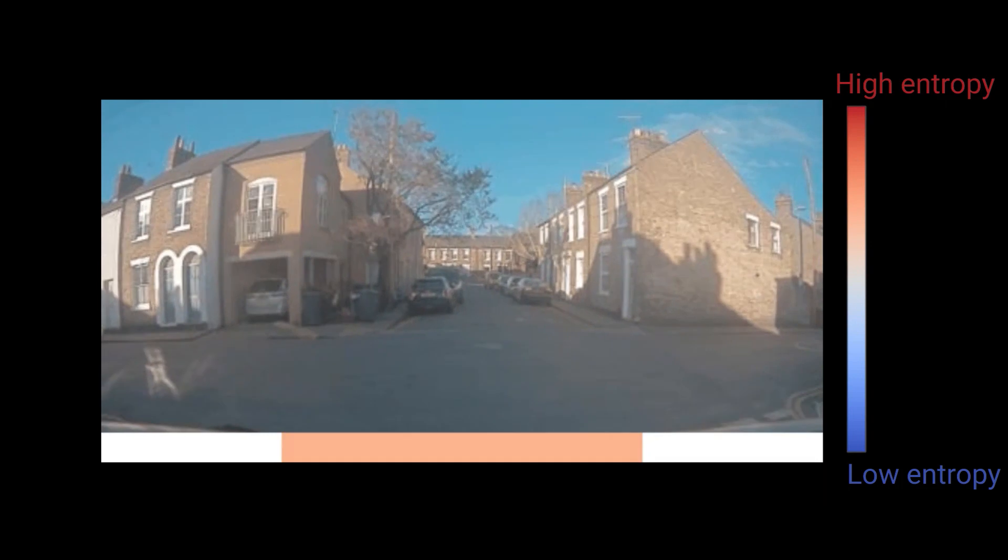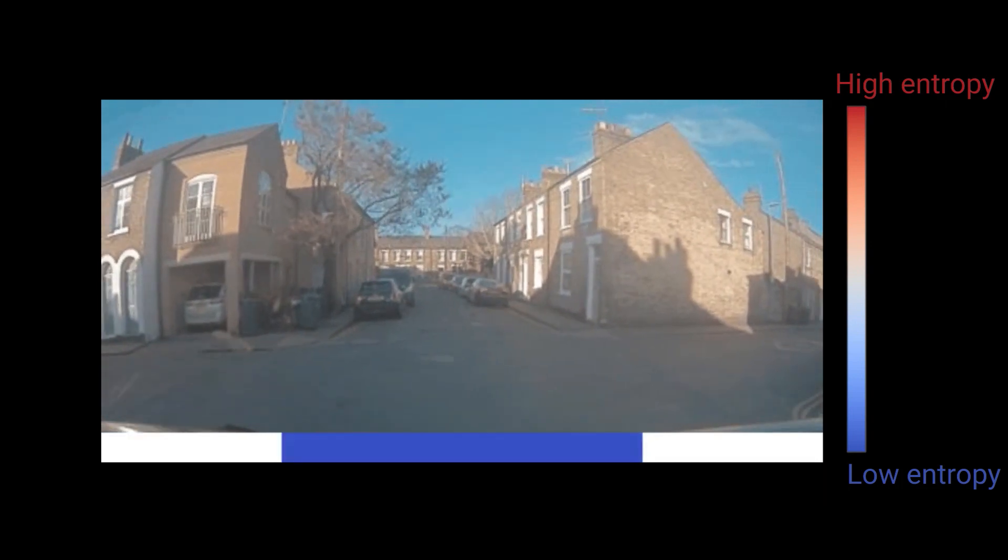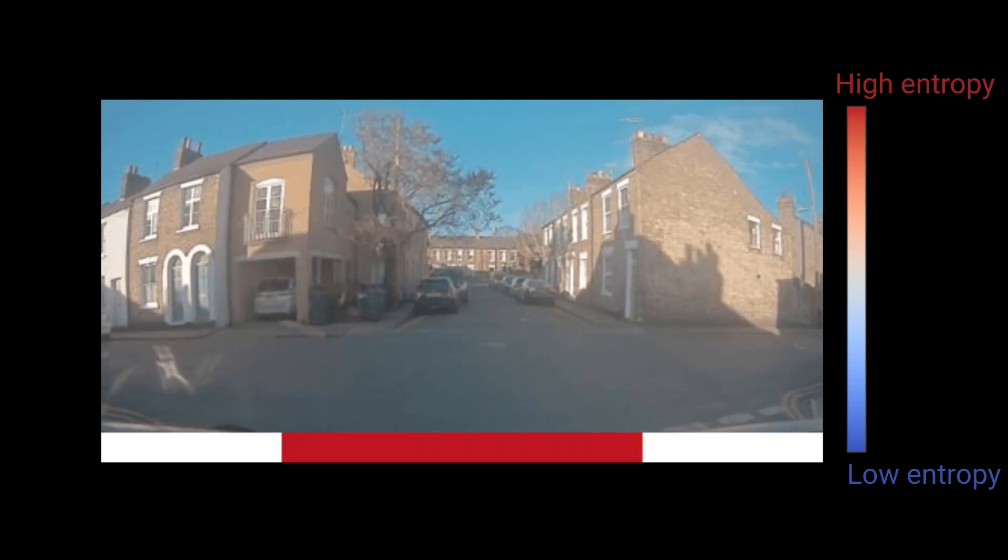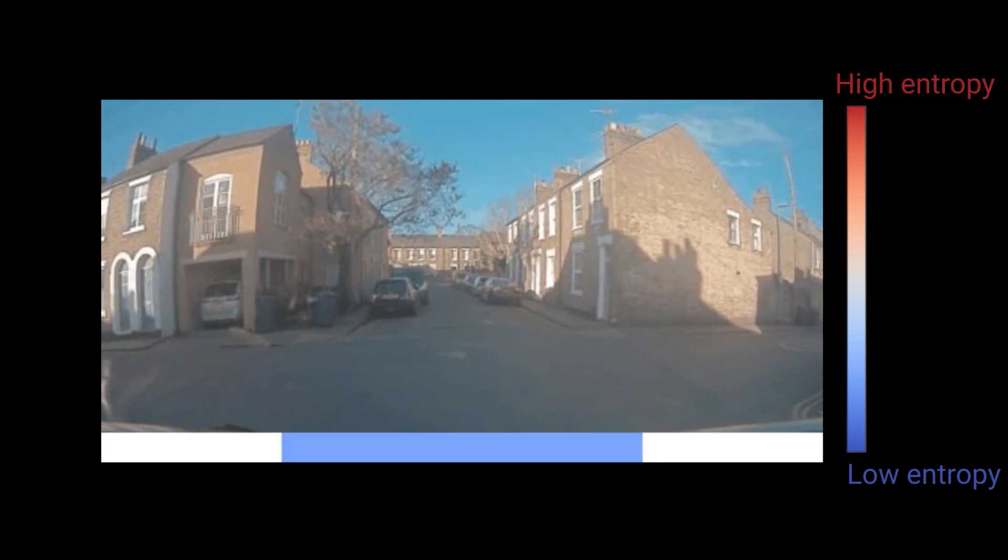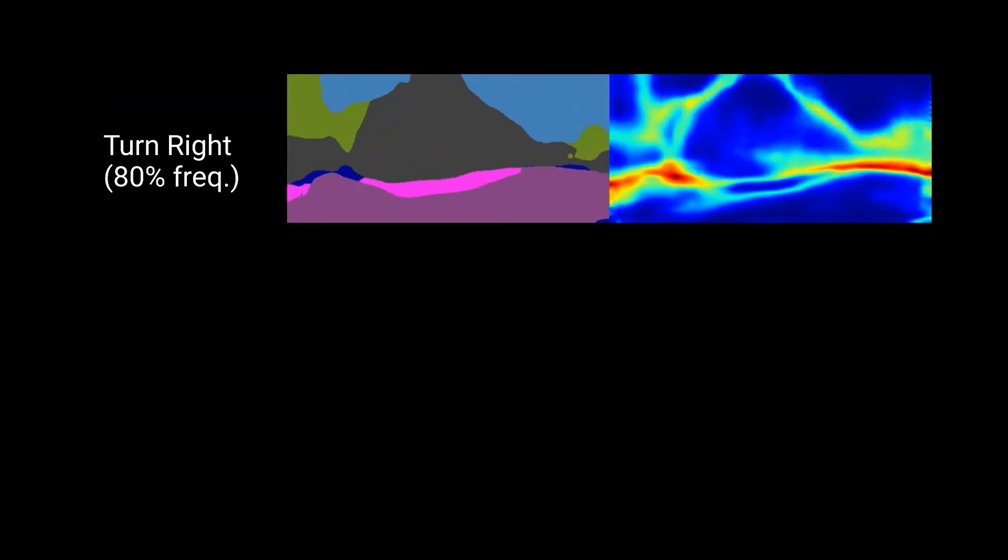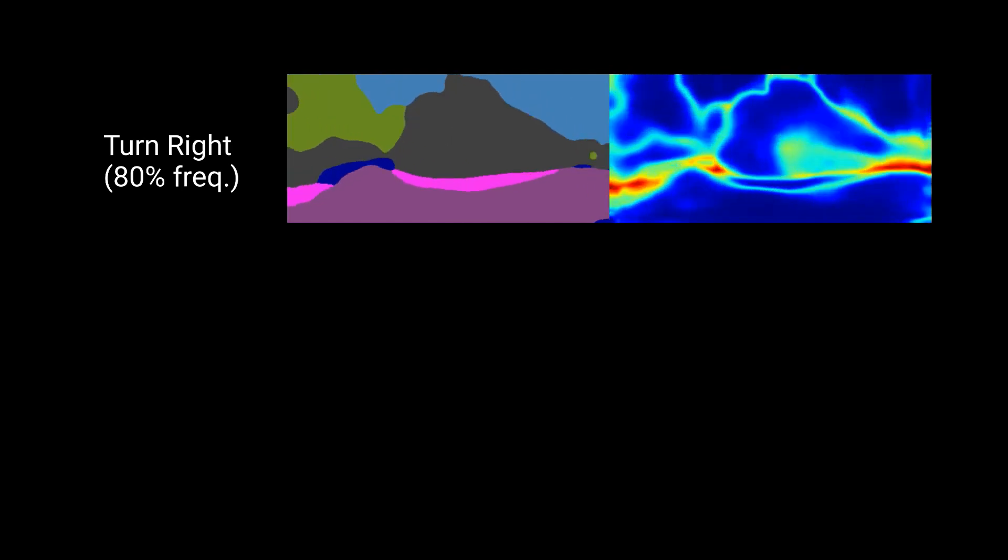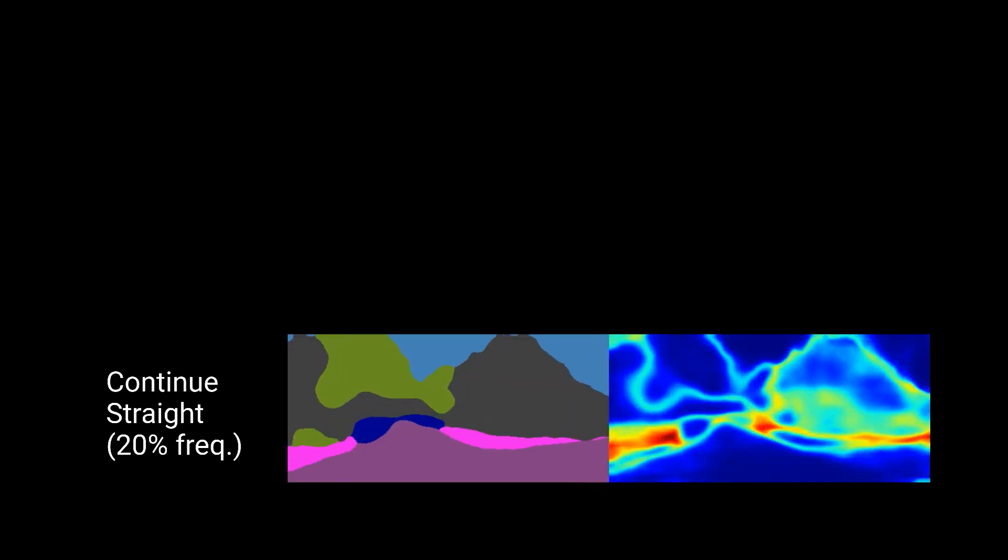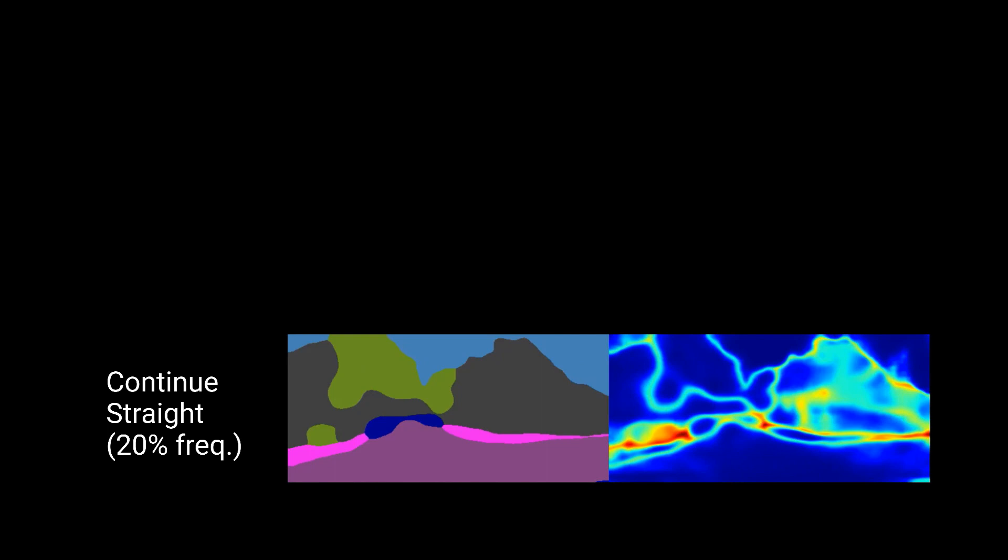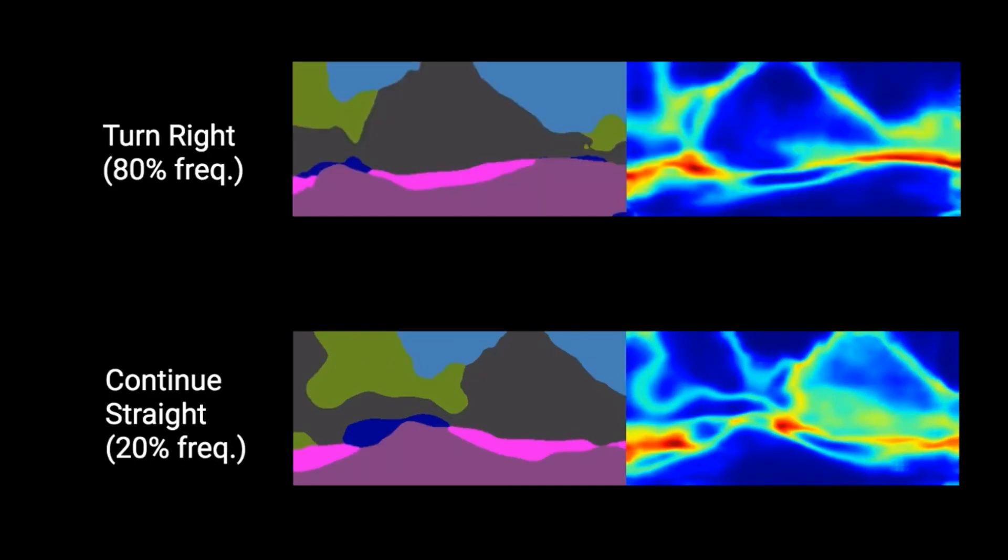Now from this intersection, let us fast forward a few frames into the sequence and predict the future again. We now see that we only have two plausible scenarios, turning right and continuing straight. As we have started moving a bit towards the right, the stationary and left turn scenarios are no longer considered likely by the model.